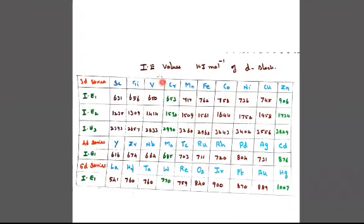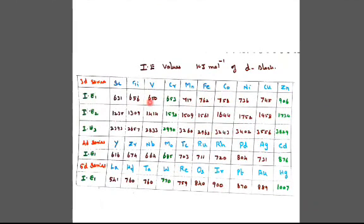I have given ionization energy values in kilojoule per mole for the 3D, 4D, and 5D series, both period-wise and group-wise. Group-wise, it gradually decreases. In the 4D series, there are variations due to lanthanide contraction and actinide contraction. From left to right in a period, ionization energy increases. From top to bottom in a group, it decreases. Ionization energy, electronegativity, and electron affinity all decrease in a group but increase across a period.